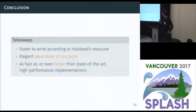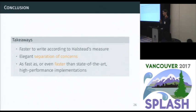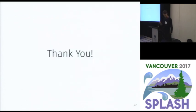In conclusion, we have developed a set of abstractions that allow writing ray traversal for different architectures. It is — according to Halstead's measure — faster and simpler to write and implement. It separates concerns, decoupling the high-level traversal algorithm from the iteration mechanism required for traversal. The performance evaluation shows it is as fast as, or sometimes faster than, state-of-the-art implementations. Thank you.